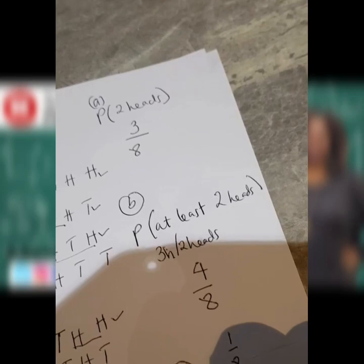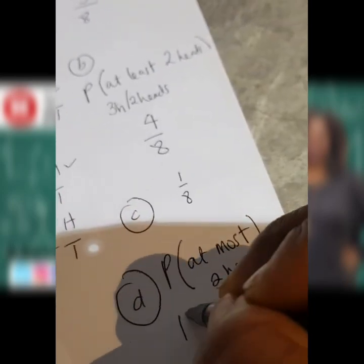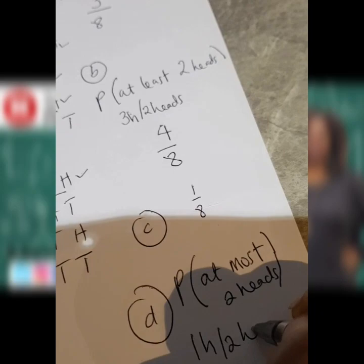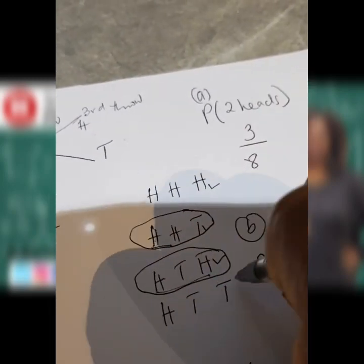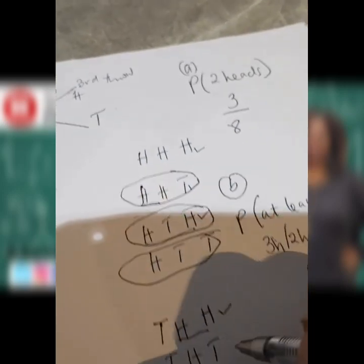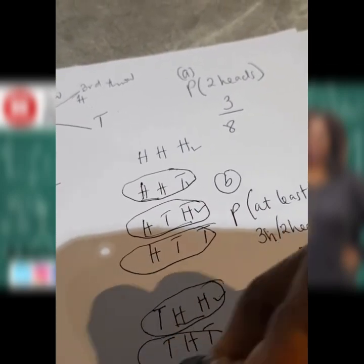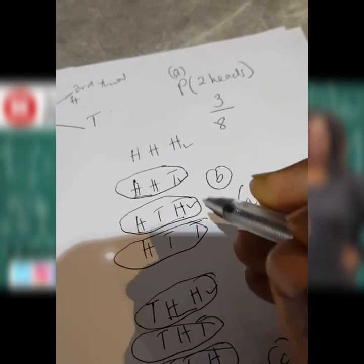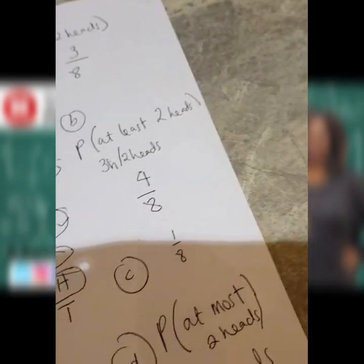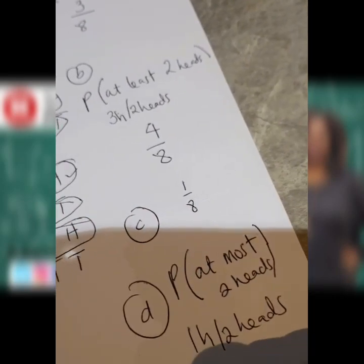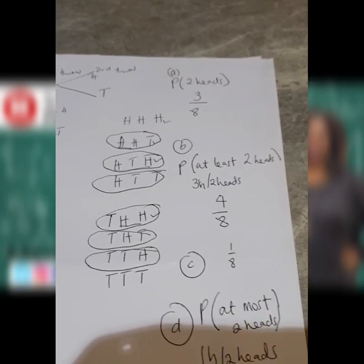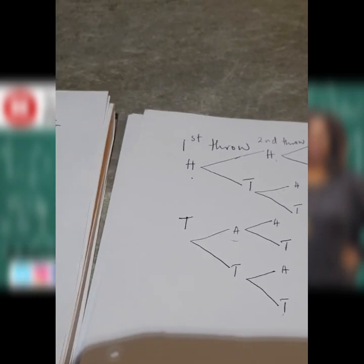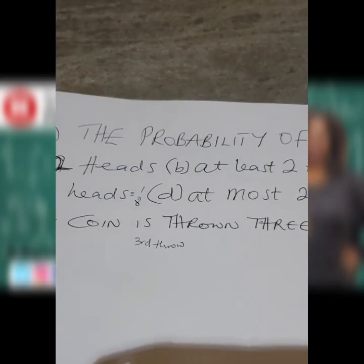At most two heads means two heads or one head. We have: two heads here, two heads here, one head here, two heads here, one head here, one head here. That's six combinations. So at most two heads is six out of eight possibilities, which you can also reduce.